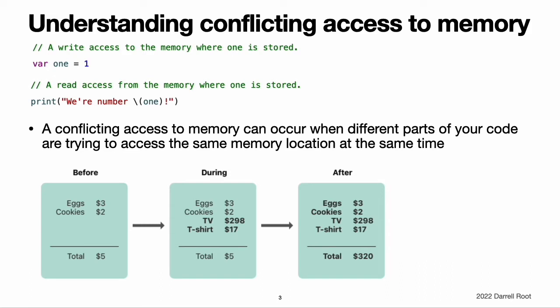In Swift, there are ways to modify a value that spans several lines of code, making it possible to attempt to access a value in the middle of its own modification. You can see a similar problem by thinking about how you update a budget that is written on a piece of paper.